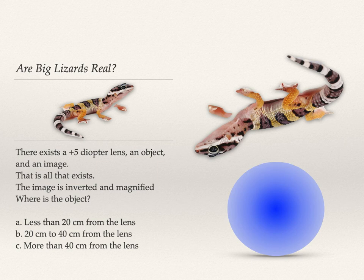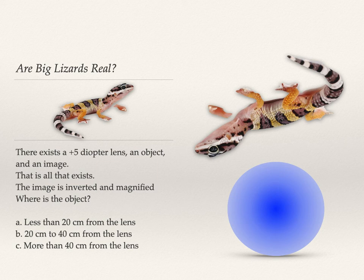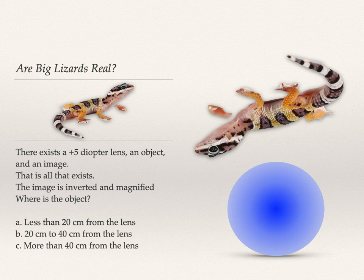If the image is inverted and magnified with a plus-5-diopter lens, where is the object? We have three situations: virtual/magnified/upright, inverted/real/magnified, and inverted/real/minified. Inverted and magnified means it must be real and between F and 2F. For a plus-5 lens, F is 20 cm and 2F is 40 cm, so the object must be between 20 and 40 centimeters from the lens.